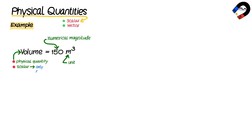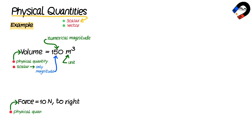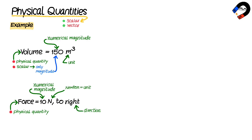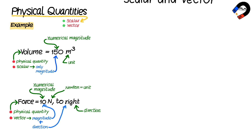There are two types of physical quantities: scalar and vector. Volume is a scalar quantity because it has no direction. The force of 10 newtons is a physical quantity — the value 10 represents the numerical magnitude of the force, newton is the unit of force, and direction represents the force's direction.